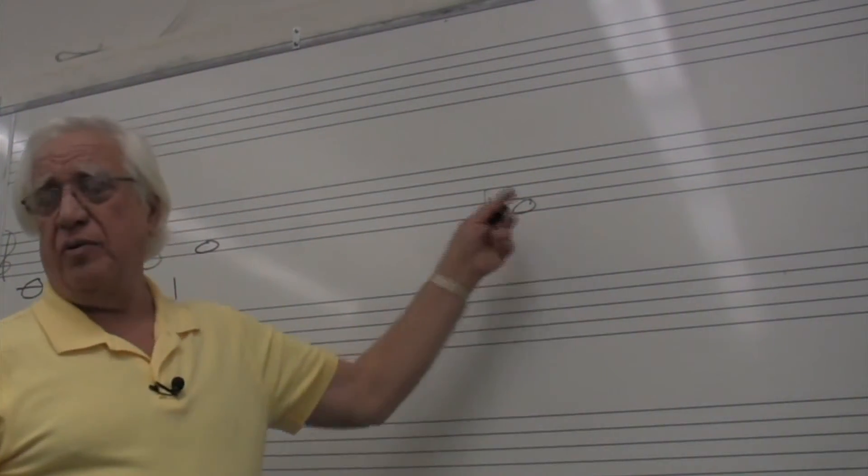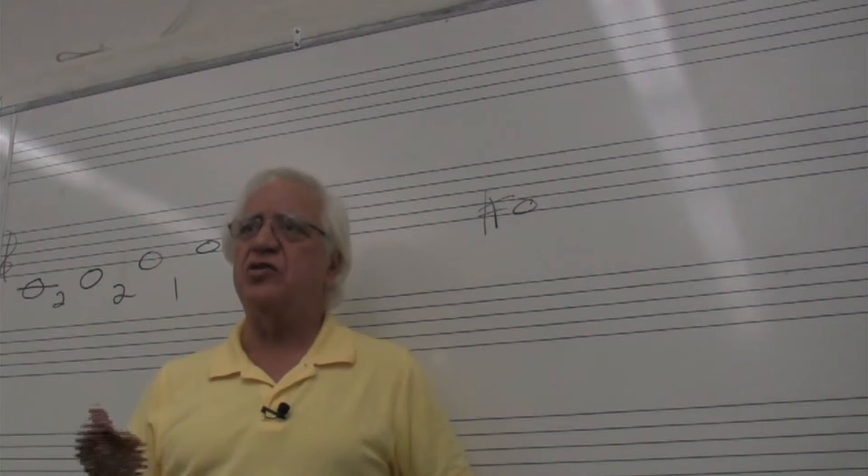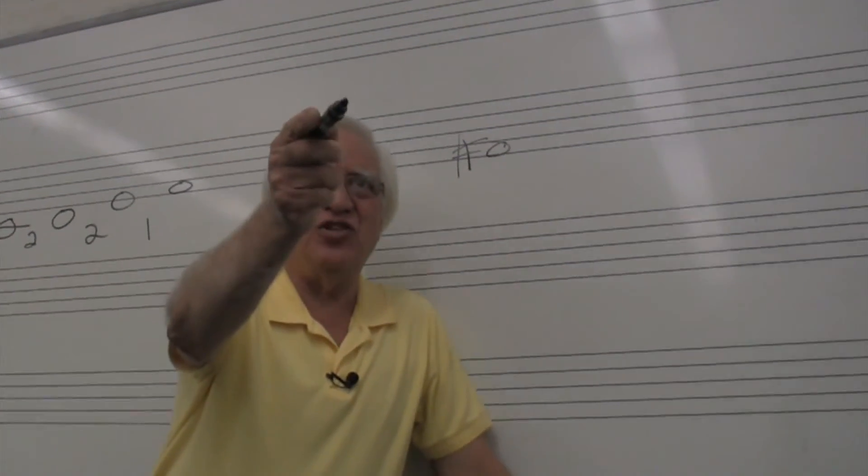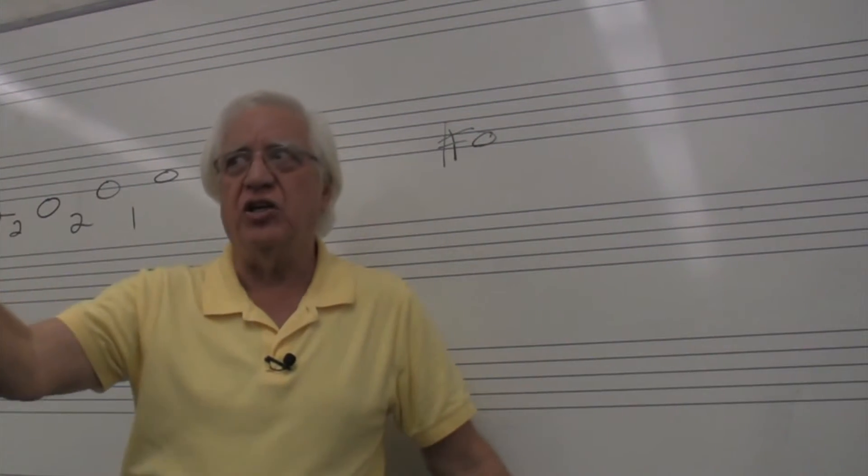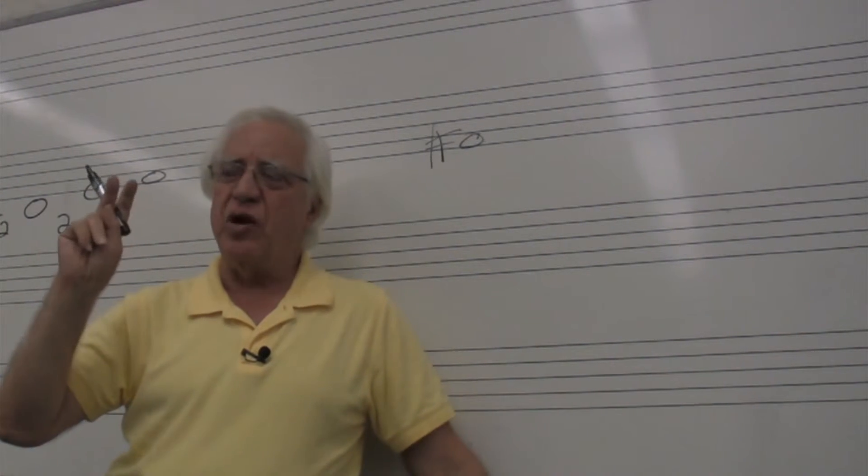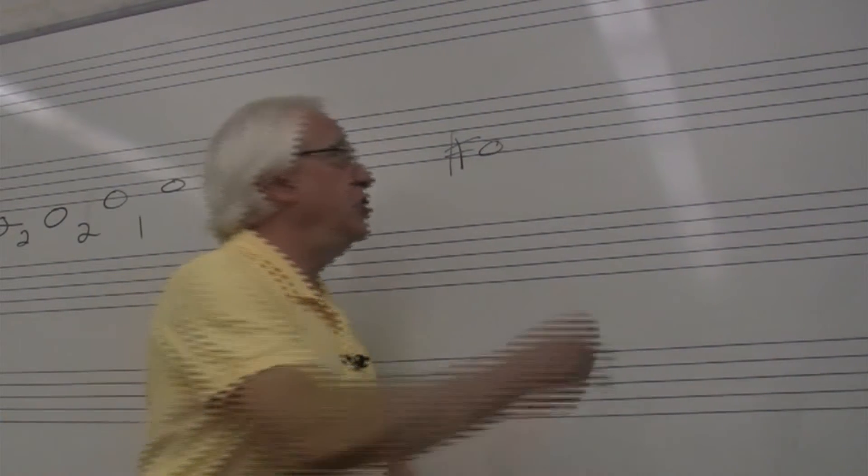All right, let's make a major scale out of F sharp. Now we have to say this. Well, what follows F in the alphabet? Some kind of G, correct? Say some kind of G. We don't know yet what kind of G it is. Let's count up two half steps from F sharp. Tell me what kind of G that is. That's a G sharp.